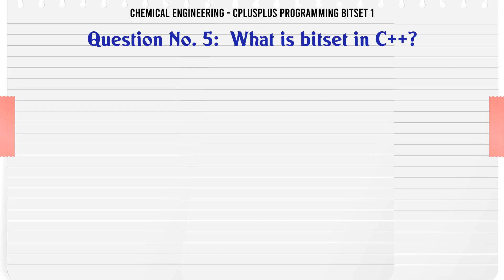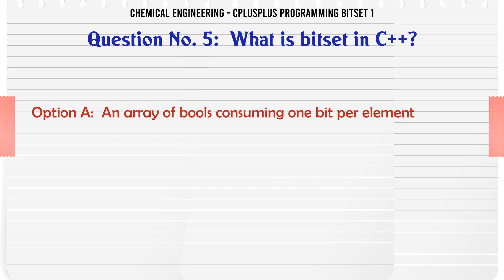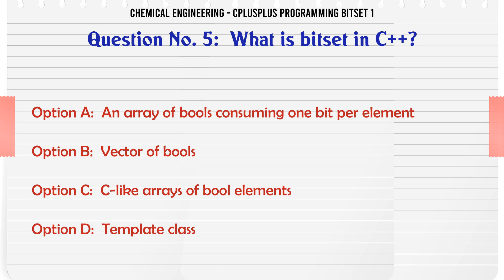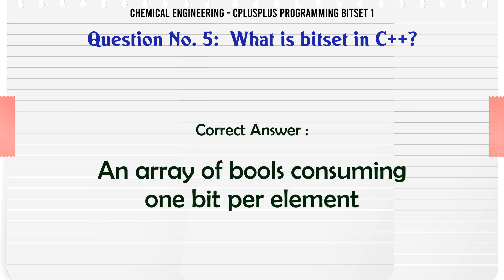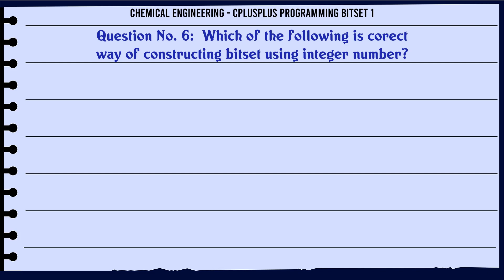What is bitset in C++? A. An array of bools consuming 1 bit per element. B. Vector of bools. C. Like arrays of bool elements. D. Template class. The correct answer is an array of bools consuming 1 bit per element.